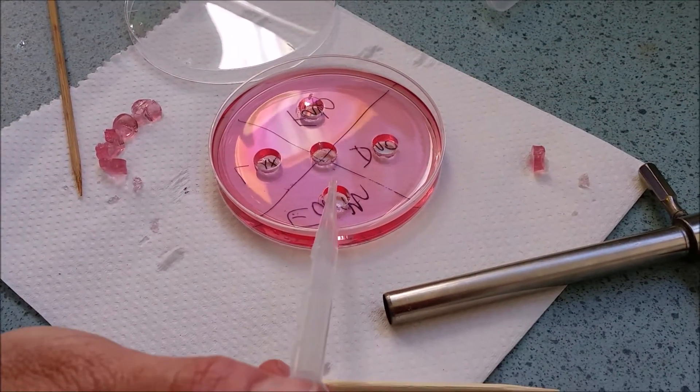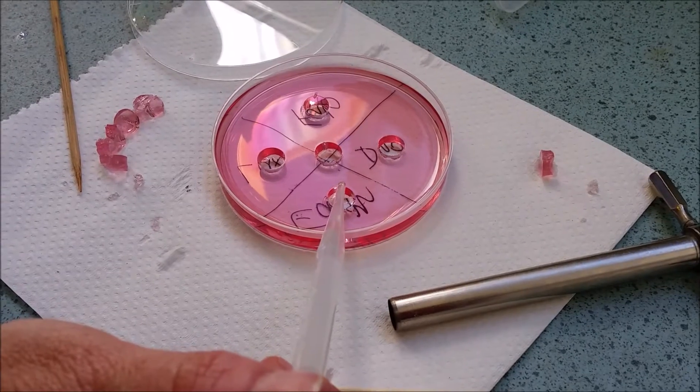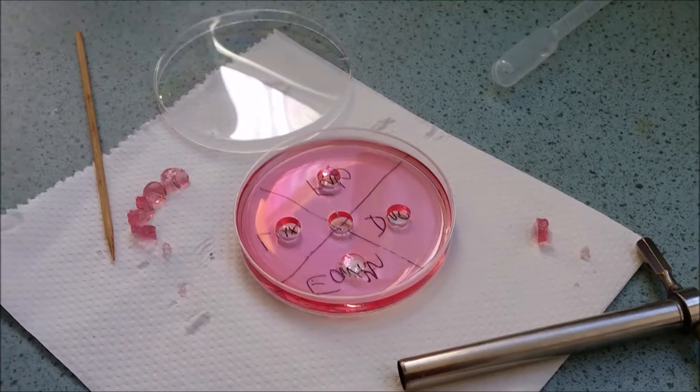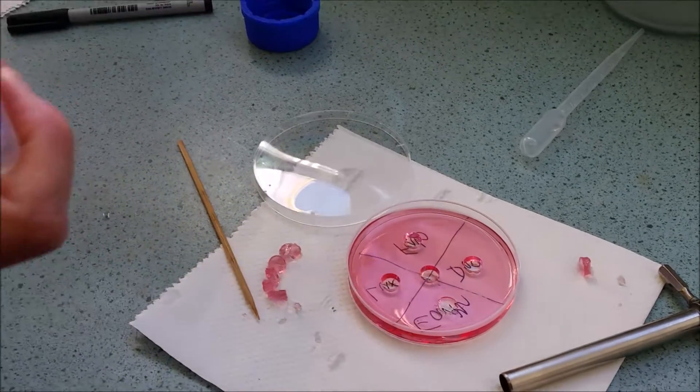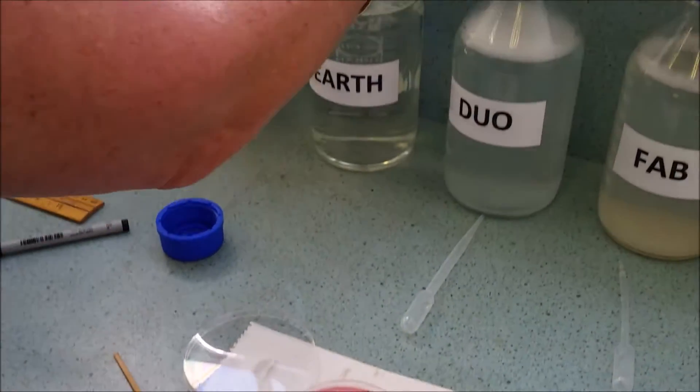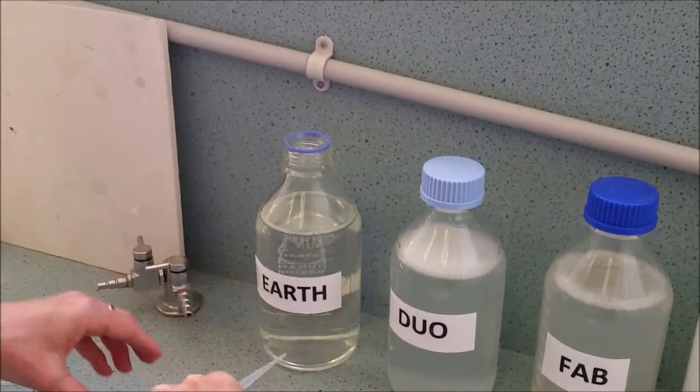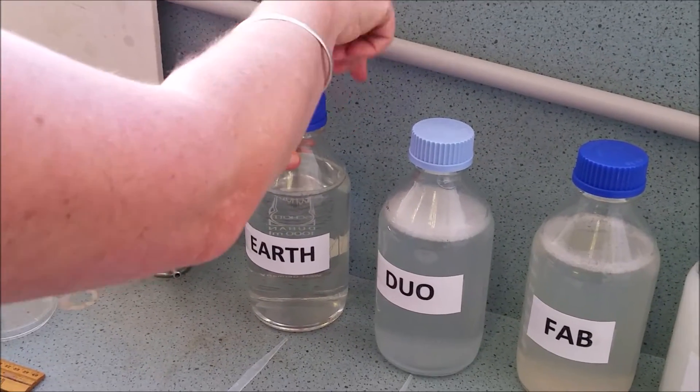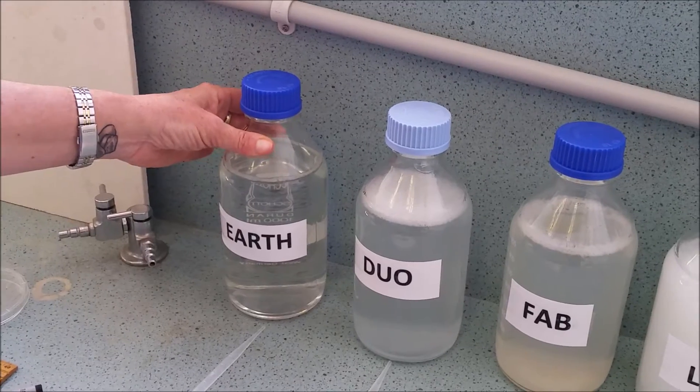You only want to have approximately four or five drops. One, two, three, four, five into the well. It hasn't leaked, it hasn't bleached out anywhere. Go straight back in and place directly in front of the bottle. The lid's gone back on for the next person.